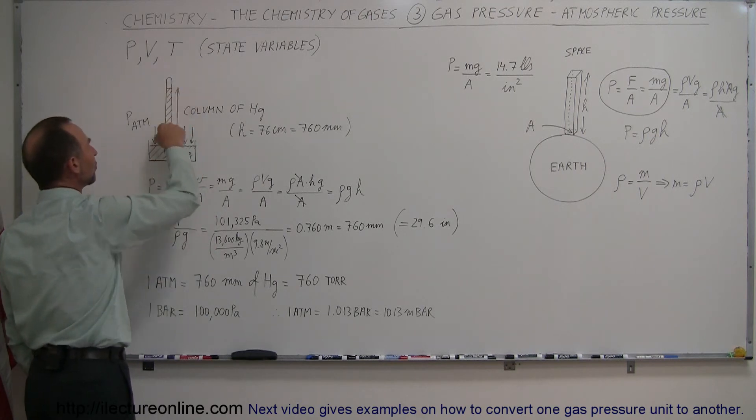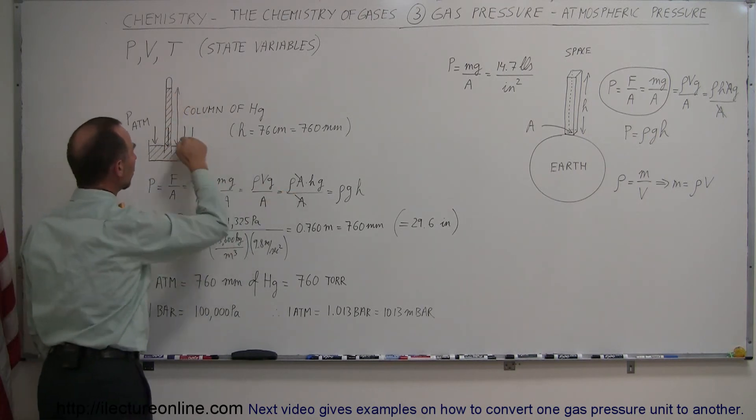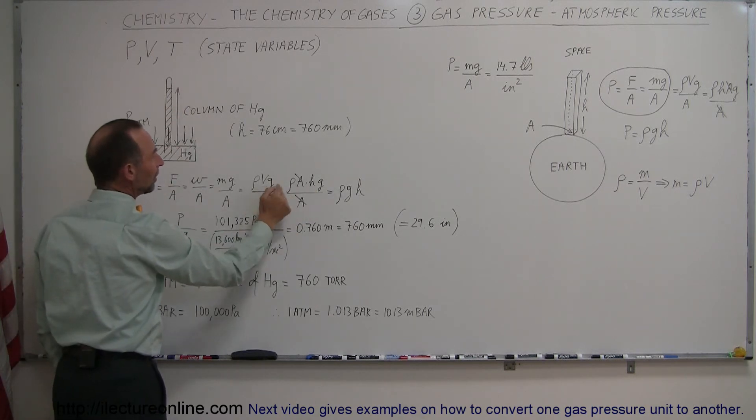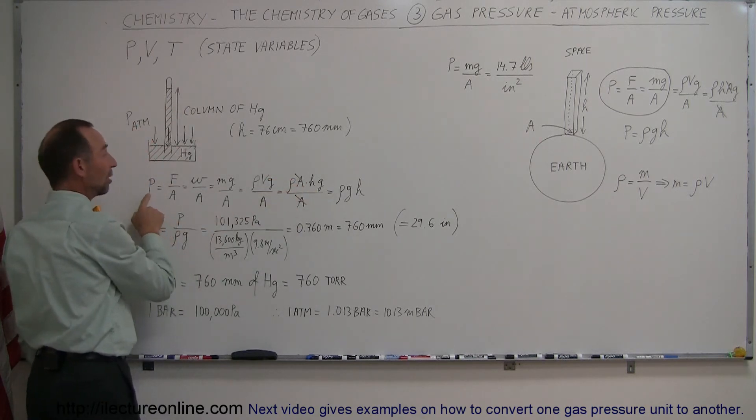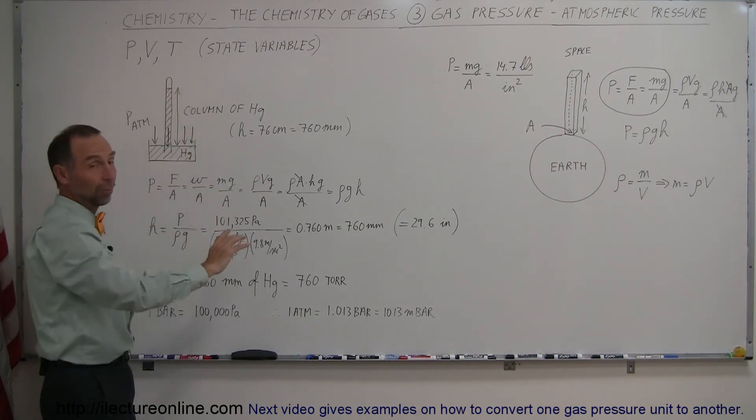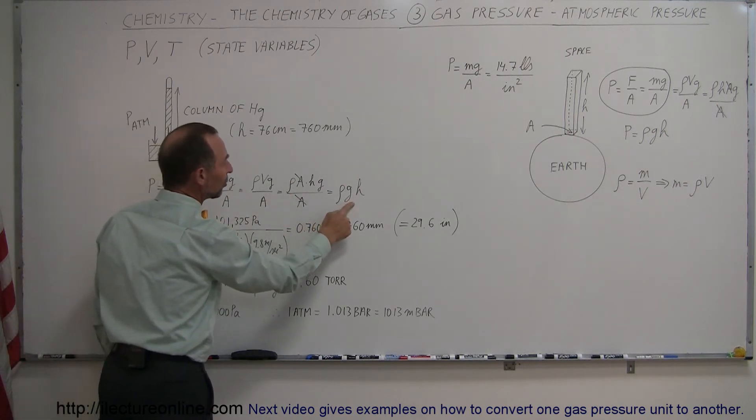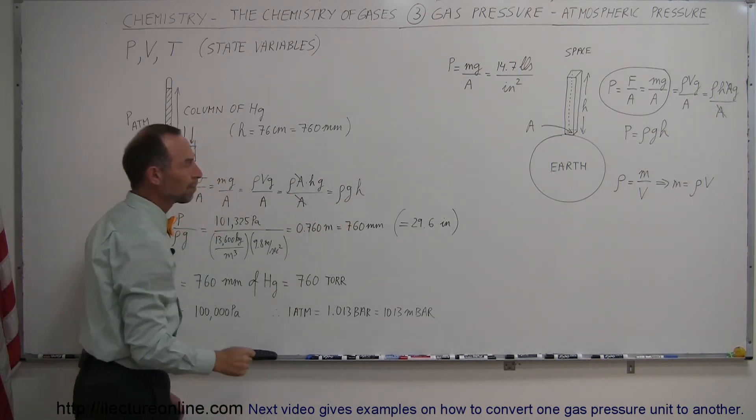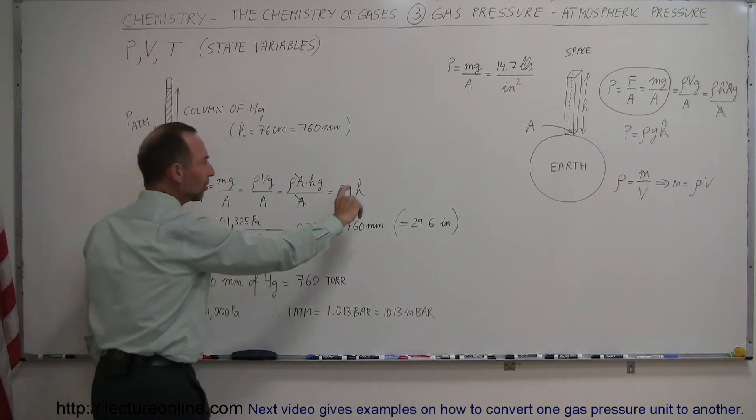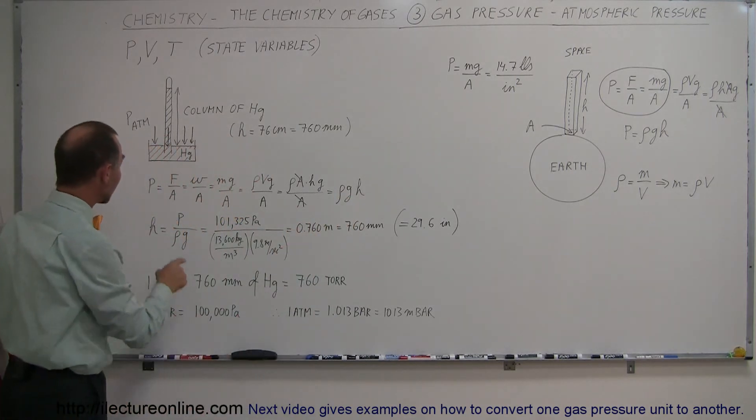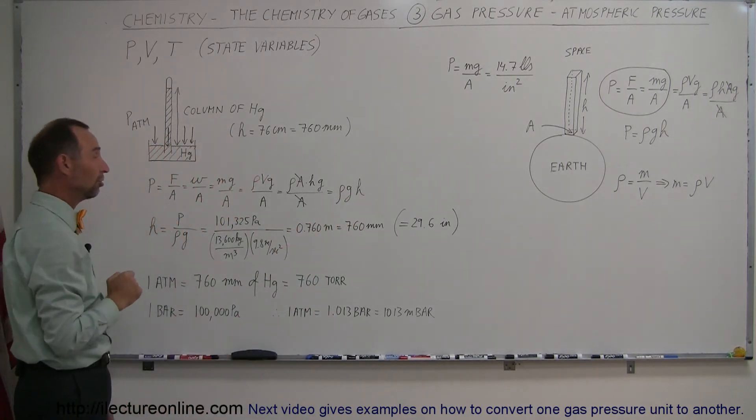And, of course, the volume of this mercury in this tube is equal to the cross-sectional area times the height. So he put that in for volume. The cross-sectional areas cancel out. And again, he came up with the equation, just like we did over there, that the pressure caused by this mercury, just like the pressure caused by a gas, is equal to the density times acceleration to the gravity times the height. Since he knew the height because he was able to measure it and he could figure out the acceleration to gravity and he could figure out the density of that mercury, he was able to calculate the pressure, the atmospheric pressure.